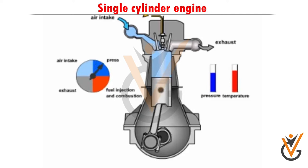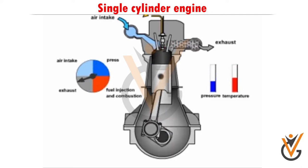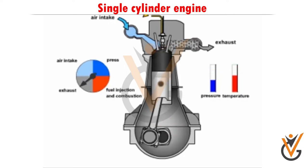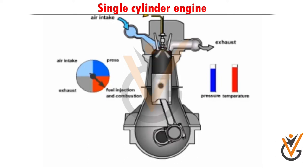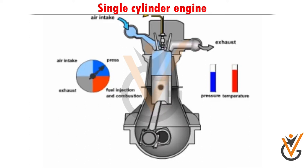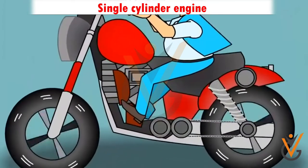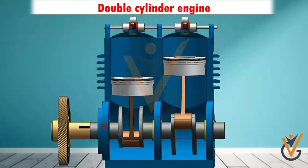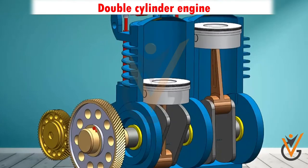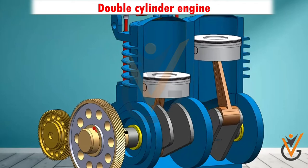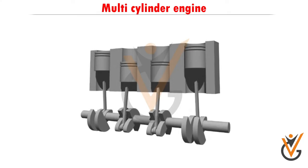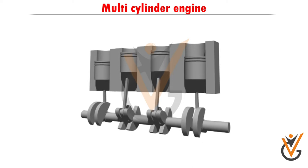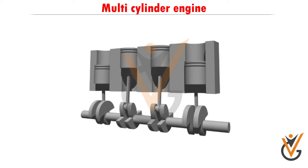On the basis of the number of cylinders, engines are classified as single cylinder engine, double cylinder engine, and multi-cylinder engine. A single cylinder engine consists of one cylinder and is generally used in motorcycles and scooters. A double cylinder engine consists of two cylinders. A multi-cylinder engine consists of more than two cylinders.